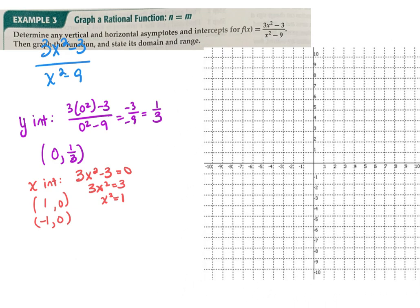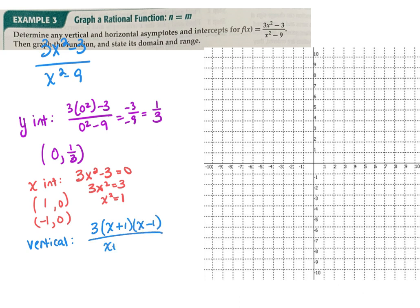Now for asymptotes. For vertical, I need to factor. Taking a 3 out of the numerator gives 3 times (x plus 1)(x minus 1). The denominator factors as (x plus 3)(x minus 3). The problems in the denominator occur at x equals 3 and x equals negative 3. Are either of those removable — can I cancel either one? No, so both are vertical asymptotes.